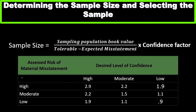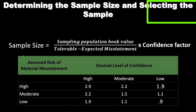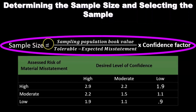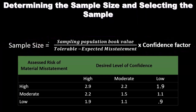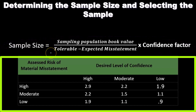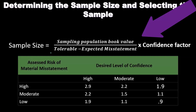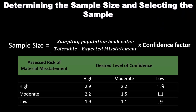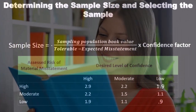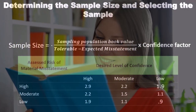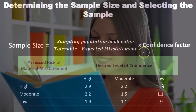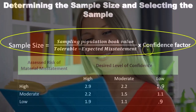Determining the sample size and selecting the sample — so how do we determine what the sample size is? The formula is: sample size equals the sampling population book value divided by tolerable misstatement minus expected misstatement, times a confidence factor.